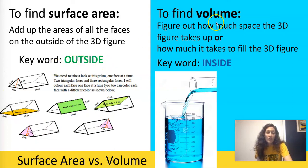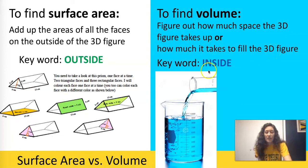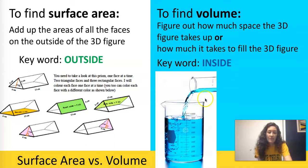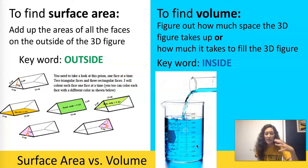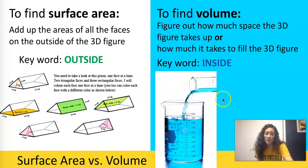Now to find volume, this is different. You have to figure out how much space the 3D figure takes up, or how much it takes to fill the 3D figure. The key word is inside. So surface area — you want to think outside; volume — you want to think inside. And in the picture I have this beaker being filled up with a liquid to represent that volume is how much space it takes up or how much it takes to fill a 3D object.